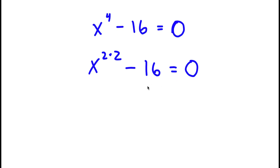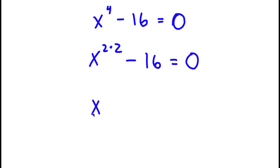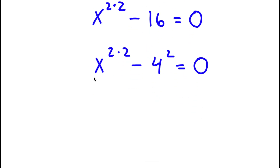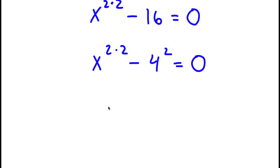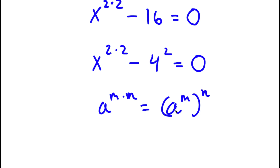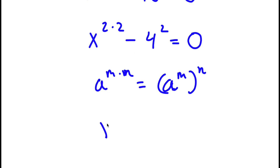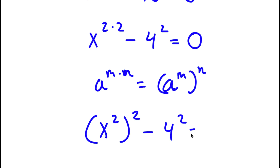Now 16, I can rewrite as 4 to the power of 2. So now I have x to the power of 2 times 2 minus 4 to the power of 2 is equal to 0. If I have something in the form a to the power of m times n, this is equal to a to the power of m to the power of n. So x to the power of 2 times 2 can be rewritten as x to the power of 2 to the power of 2 minus 4 to the power of 2 is equal to 0.